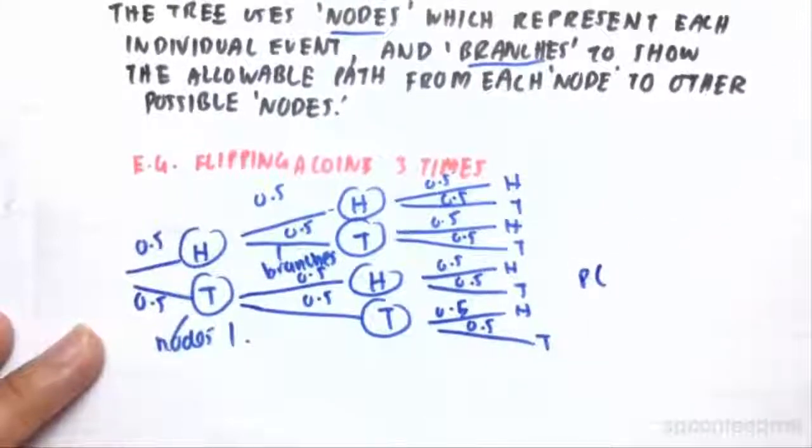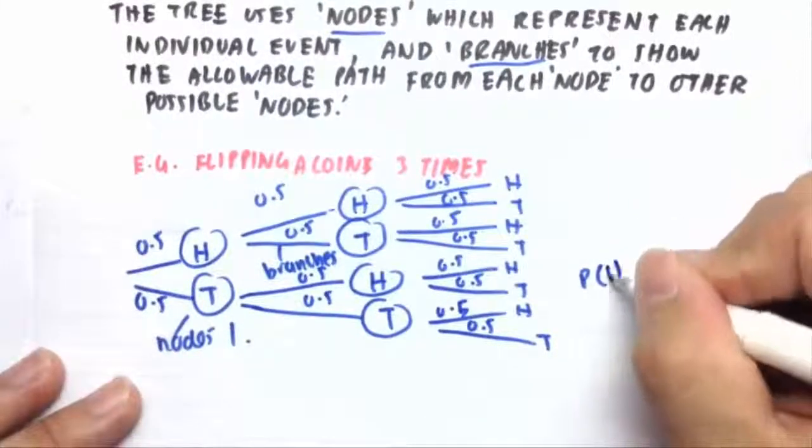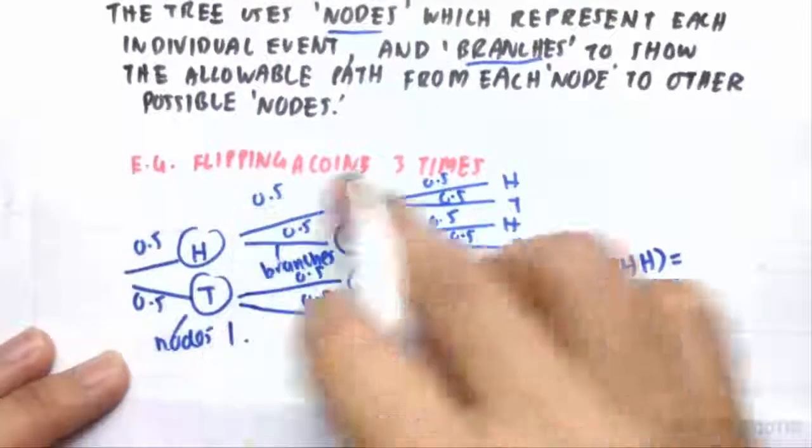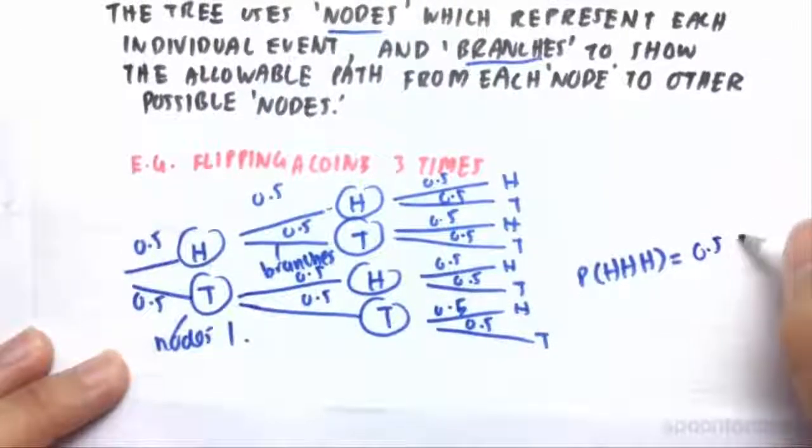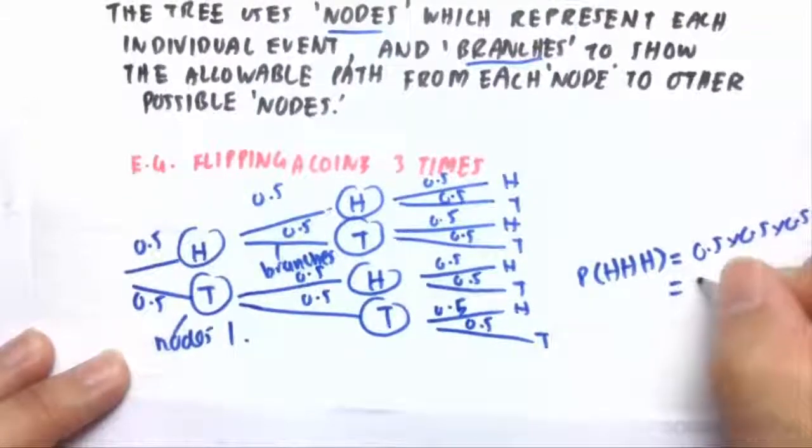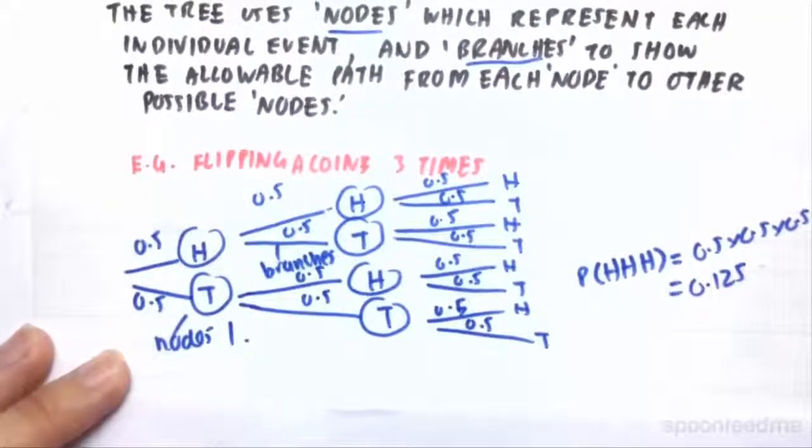For example, if we wanted to find the probability of flipping three heads, this would just equal the probabilities on each branch. So it'd just be 0.5 times 0.5 times 0.5 on each branch, which would give us a probability of 0.125 or 12.5%.